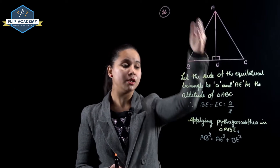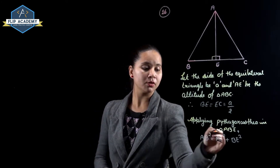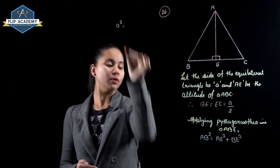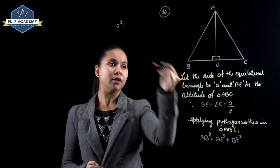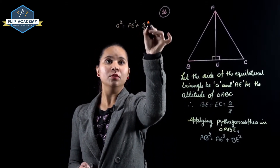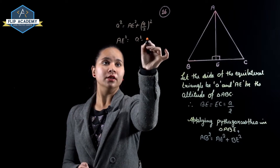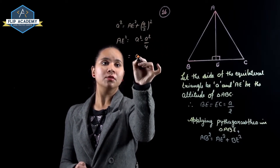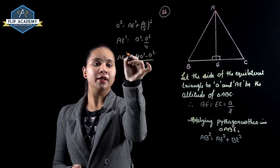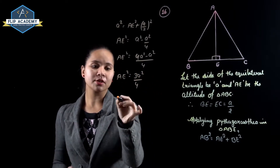In triangle ABE, hypotenuse square equals base square plus perpendicular square, so AB² equals AE² plus BE². AB has value A, so A² equals AE² plus (A/2)². Rearranging: AE² equals A² minus A²/4, which equals 4A²/4 minus A²/4, giving AE² equal to 3A²/4.